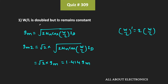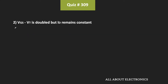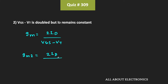So when the W/L ratio is doubled and drain current id is kept fixed, the new transconductance is 1.41 times gm. In the second case, Vgs-Vt is doubled while the drain current id is kept fixed. Using the expression gm = 2id / (Vgs-Vt), when Vgs-Vt is doubled, the new transconductance gm2 = 2id / (2 × Vgs-Vt) = 0.5 times gm.